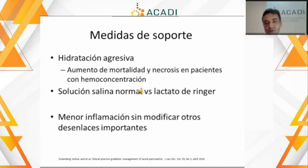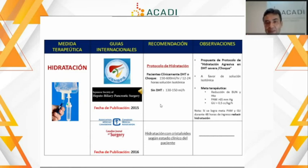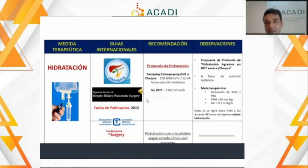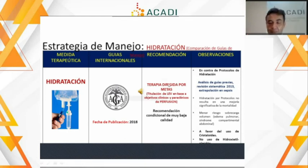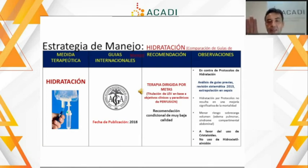Hay que decir que falta un estudio bien diseñado para saber cuál es el régimen de reanimación apropiado. Hay variabilidad en lo que dicen las guías: la guía americana más reciente no pone ningún volumen específico de reanimación, sino que debe ser guiado por metas: específicamente la diuresis, la perfusión y el ácido láctico. Se considera que una reanimación no agresiva está por debajo de 5 cc/kg/hora y más de 10 cc/kg/hora es una reanimación agresiva; se prefieren ahora volúmenes bajos.